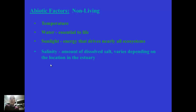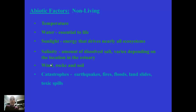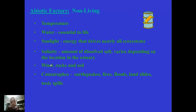Salinity — the amount of dissolved salt — varies depending on location in an estuary. The percentage of salt in ocean water is about 3%. In estuaries it can be higher, especially in areas where water tends to move less, because the salt can build up. Other abiotic factors include wind, rocks, and soil. Catastrophes such as earthquakes, fires, floods, landslides, and toxic spills — like the oil that spilled in the San Francisco Bay when a barge hit the Bay Bridge a few years back — were not good at all for any of the living organisms in or surrounding the Bay. So these are all abiotic or non-living factors of the San Francisco Bay.